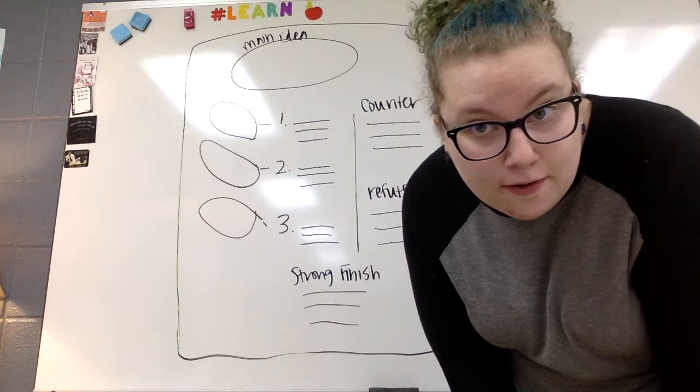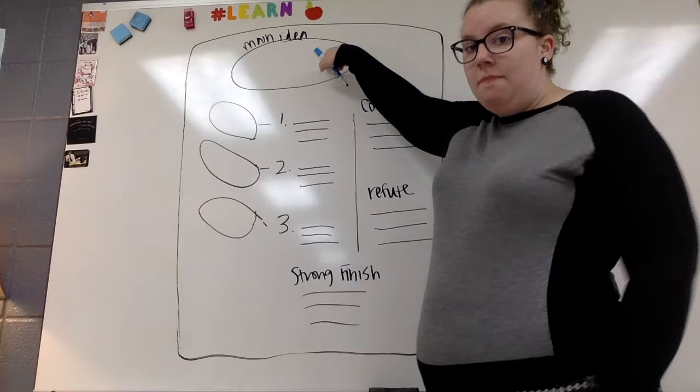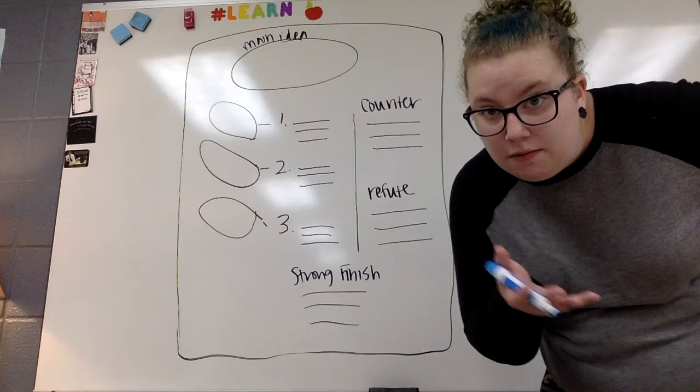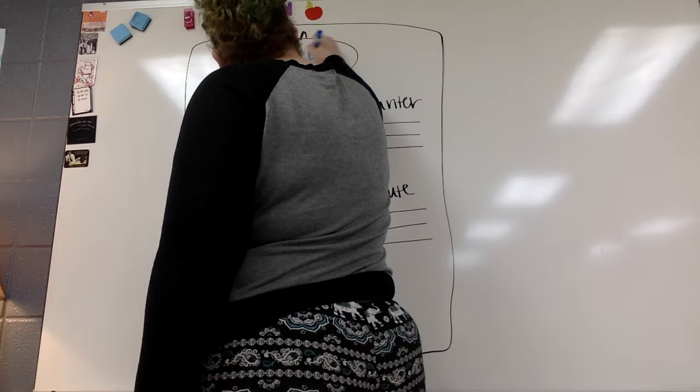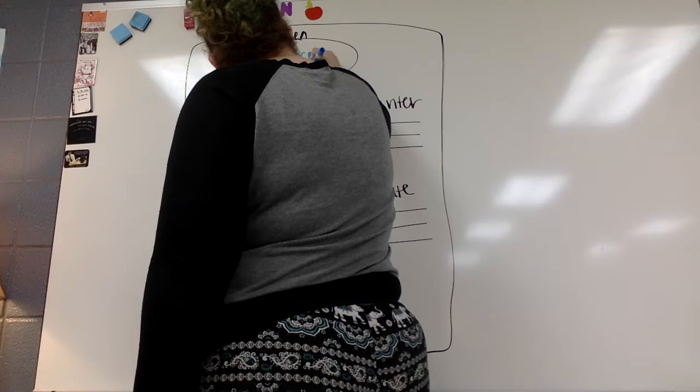So the first thing you're going to do is up here, your main idea. The main idea is going to be your overall main idea. So for you guys, it's going to be I think blank is better than blank, whether you're arguing the book or the hero. So I could say puppies are better than kittens. Okay, so now I have my main idea filled out.